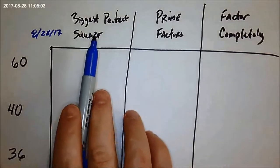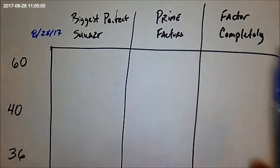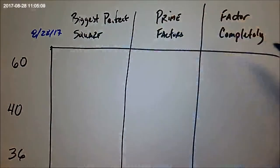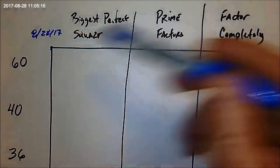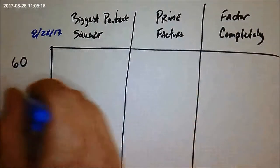I gave you some numbers and asked you to find the biggest perfect square, to do the prime factorization, and also factor completely. Now in this chart, I kind of mixed them up a little bit because to me, this is the one I would probably do first, factoring completely. It doesn't matter which way you fill out the table, but let's go ahead and do 60 first.